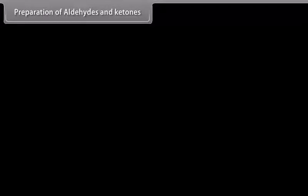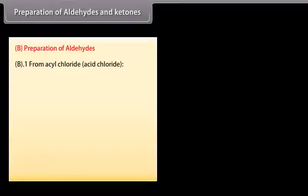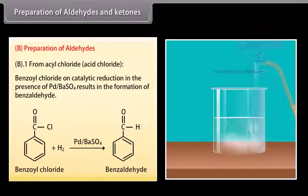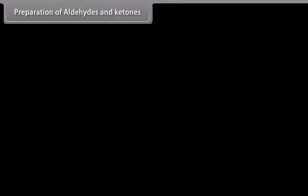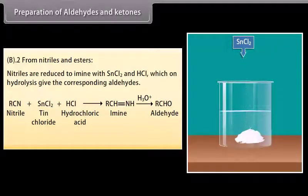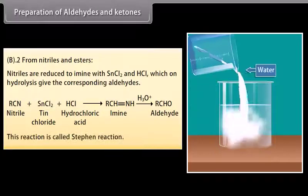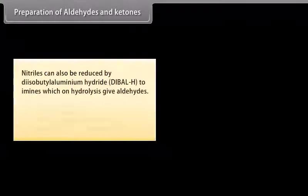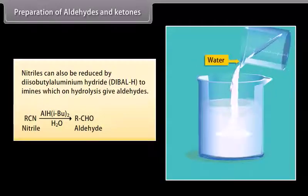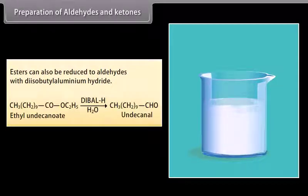Preparation of aldehydes from acyl chlorides: benzoyl chloride on catalytic reduction in the presence of palladium on barium sulfate gives benzaldehyde. From nitriles and esters: nitriles are reduced to imines with tin chloride and hydrochloric acid, which on hydrolysis give the corresponding aldehydes — this reaction is called the Stephen reaction. Nitriles can also be reduced by diisobutylaluminium hydride (DIBAL) to imines, which on hydrolysis give aldehydes. Esters can also be reduced to aldehydes with DIBAL.